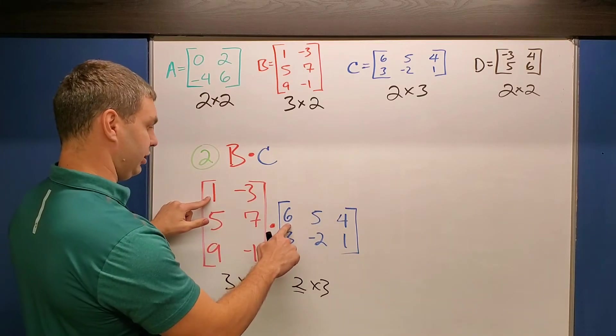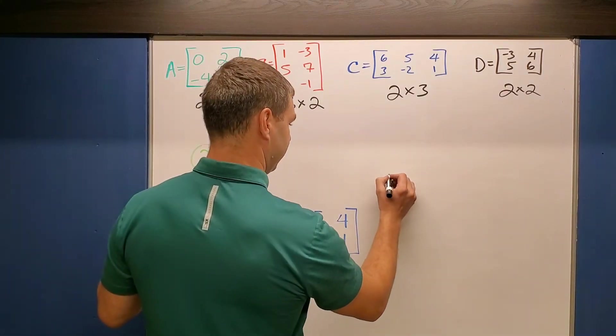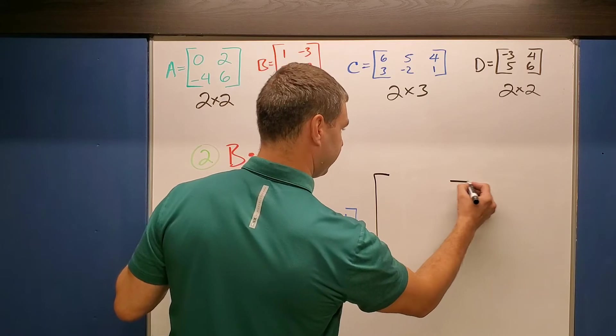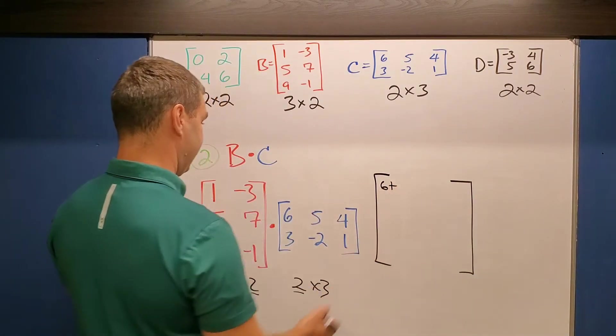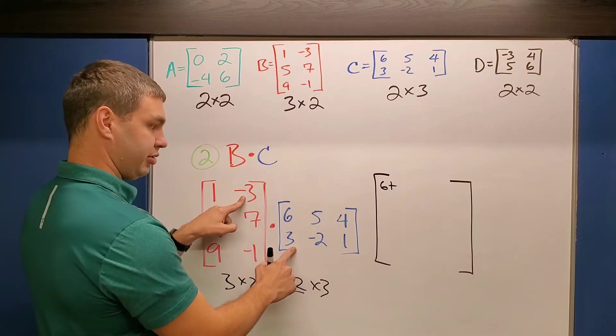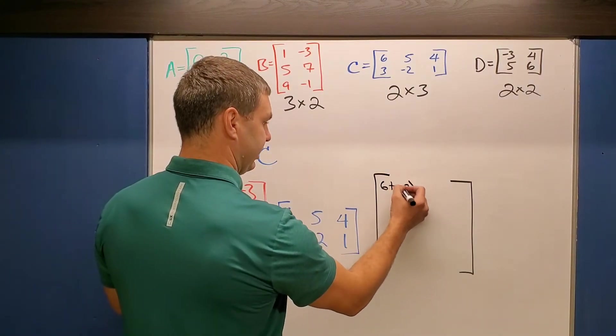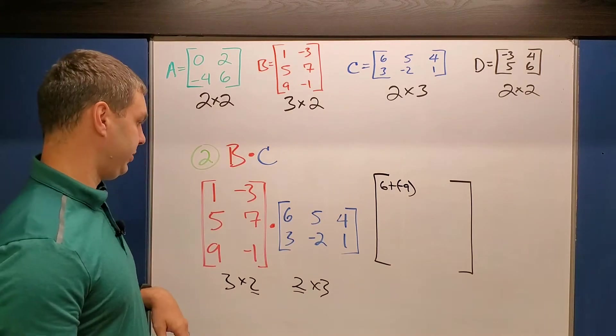When we're multiplying these together, we need to start by taking our first row times our first column. So the first elements here, we have 1 times 6. So let me make a decently big 3×3. 1 times 6 is 6 plus we're going to add that to -3 times 3. In this case, that's a -9.